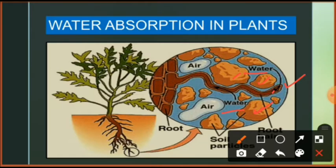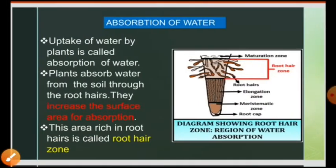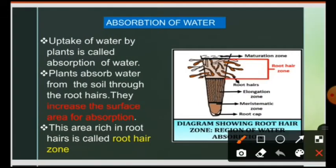The gravitational water is also found in combined form — combined with different minerals. But the water plants use for their own growth is capillary water, and 75 percent of capillary water is available to the plants for their use. So let us now discuss how plants absorb water and what is the mechanism of water absorption.